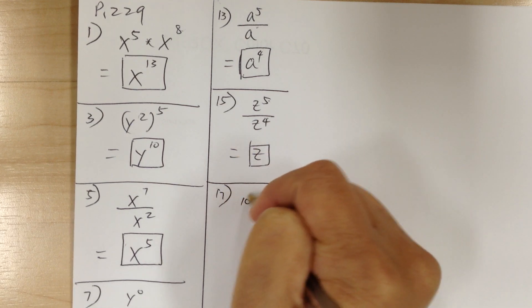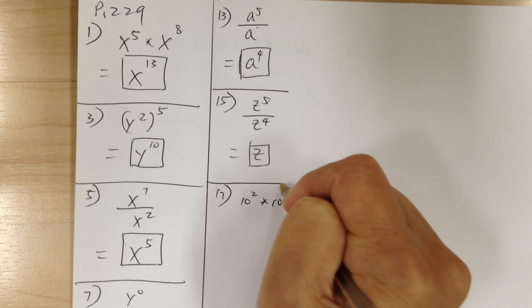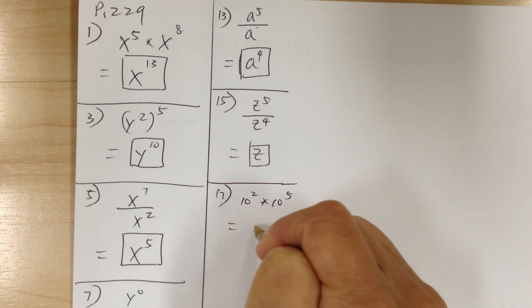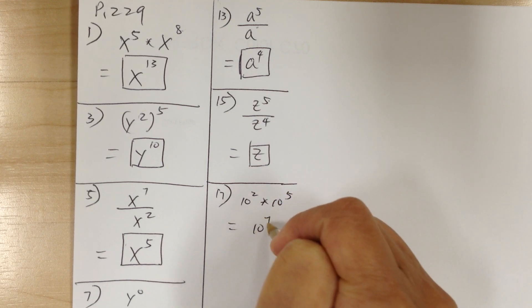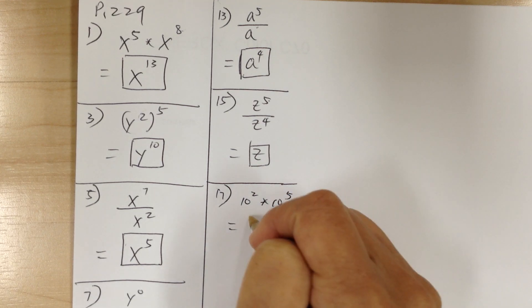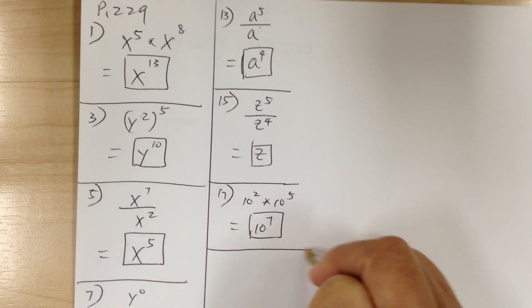Number 17, you got 10 squared times 10 to the 5. So this is equal to 10 to the 7. You don't have to write it out — you can just leave it in exponential form.